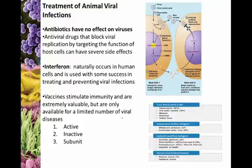Viral replication, especially in a human, had six very specific portions, so the antiviral has to eliminate or block one of those parts. We also see interferons being used. Interferons naturally occur in human cells, and we've actually had some success in extracting or replicating interferons and using them as antiviral treatments.